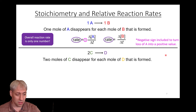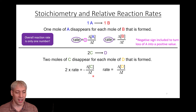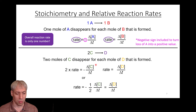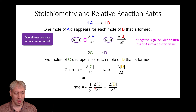For a more complex example: 2C → D. Two moles of C disappear for each mole of D formed, so C is disappearing twice as fast as D is being generated. The rate equation becomes: rate = delta[D]/delta t = negative one-half times delta[C]/delta t. The factor of one-half accounts for the stoichiometry — since C disappears twice as fast, we divide by two to keep the overall rate number the same. The negative sign accounts for disappearance.